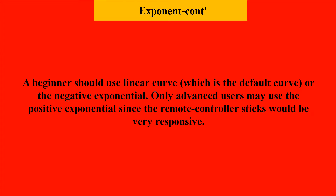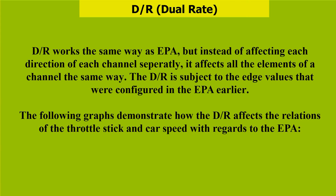Only advanced users may use the positive exponential, since the remote control sticks would be very responsive. Dual rate works the same way as endpoint adjustment, but instead of affecting each direction of each channel separately, it affects all the elements of a channel the same way. The dual rate is subject to the edge values configured in the EPA. The following graphs demonstrate how the dual rate affects the relations of the throttle stick and car speed with regards to the EPA.